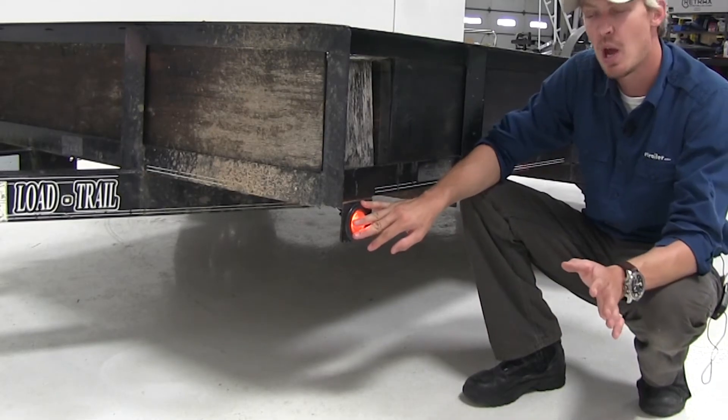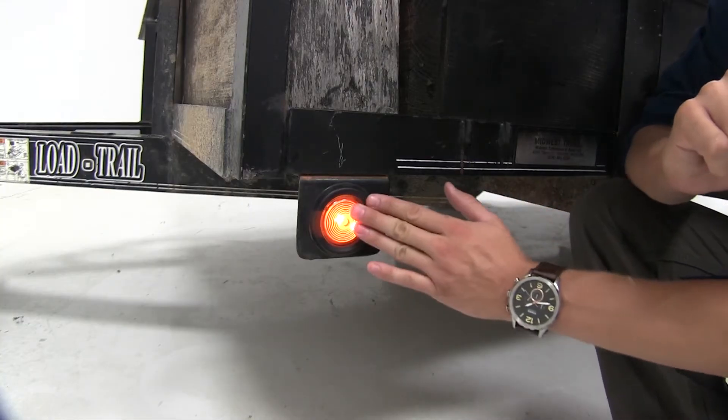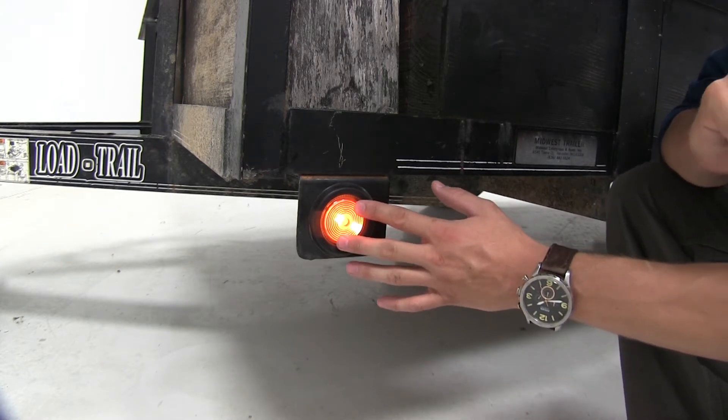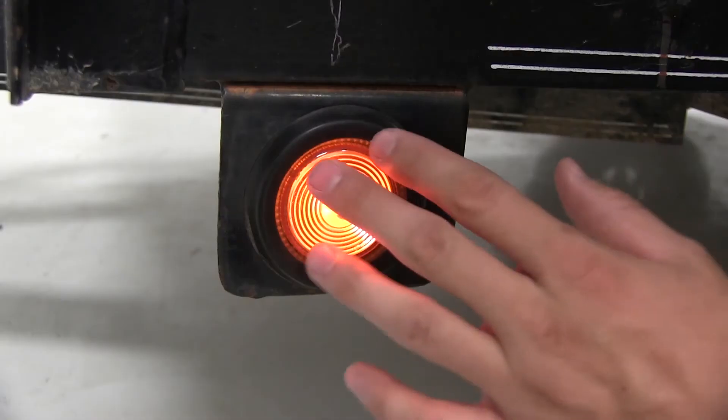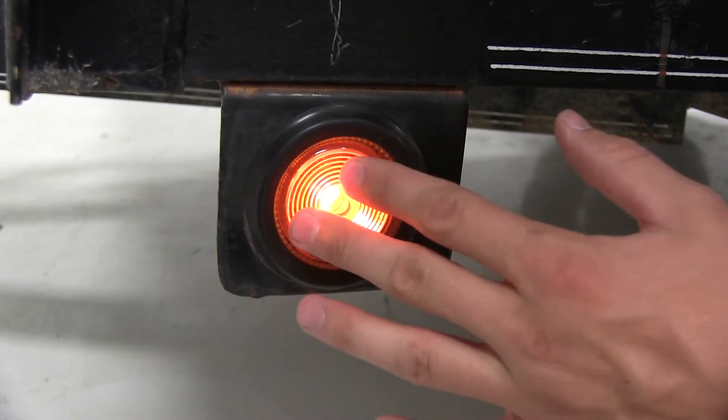This round amber light can be used as a clearance or side marker light. It's a perfect replacement to match your other incandescent lights. It uses a heavy-duty, long-lasting bulb. It features a sonically sealed waterproof housing and lens, so it's going to hold up for a long time.